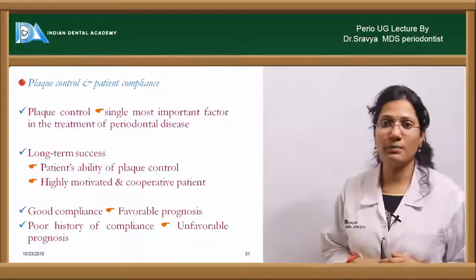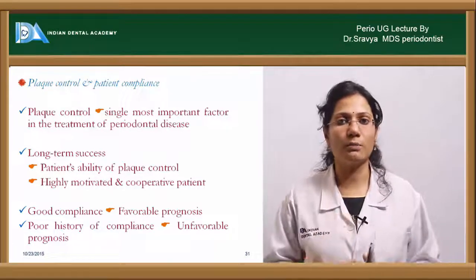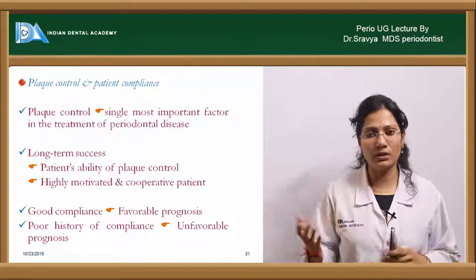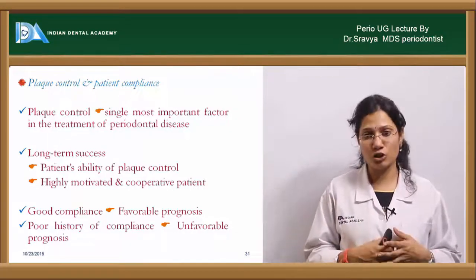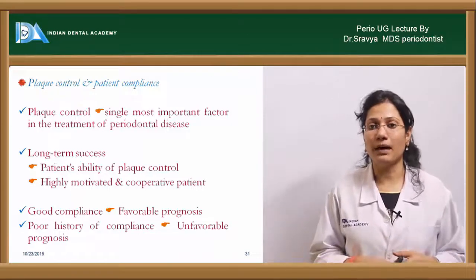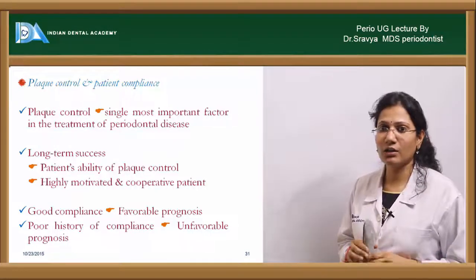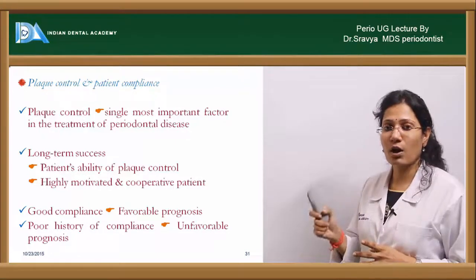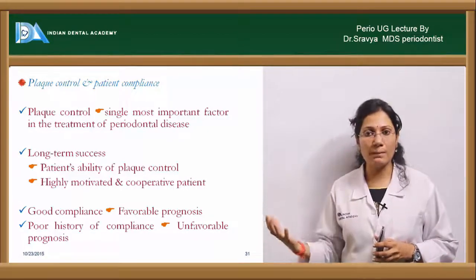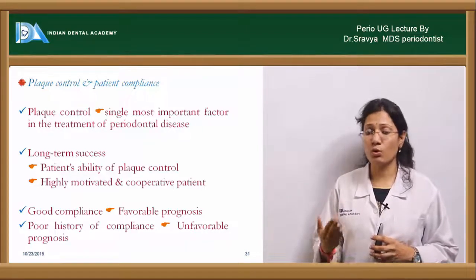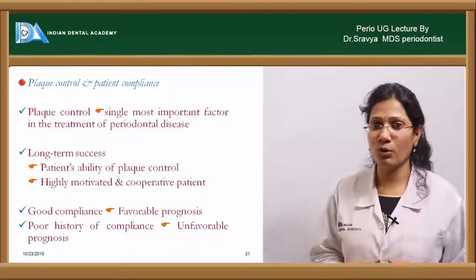How about plaque control and patient compliance? If the patient is motivated and listens to you, comes for treatment when called, and shows up for follow-ups, then the prognosis would be more favorable compared to a non-compliant patient. Plaque control is the single most important factor in the treatment of periodontal diseases. The long-term success of periodontal therapy always depends on your plaque control. If the patient has a good ability to maintain oral hygiene, his prognosis would be good. A highly motivated and cooperative patient would have a better or favorable prognosis compared to an unmotivated or uncooperative patient.